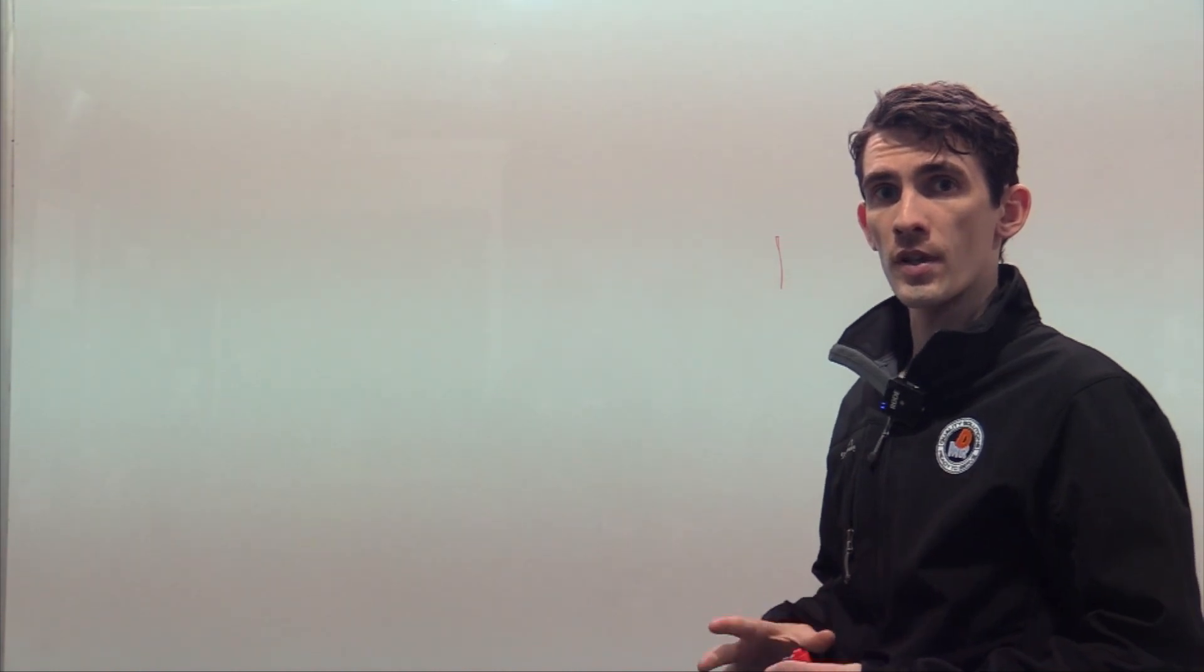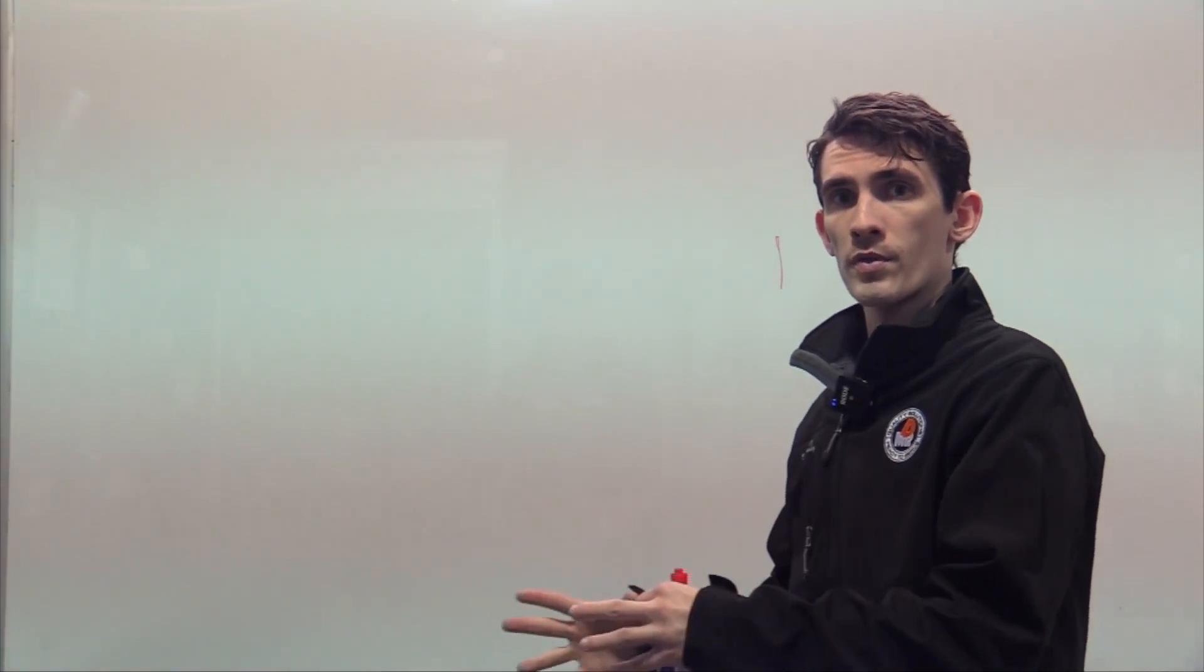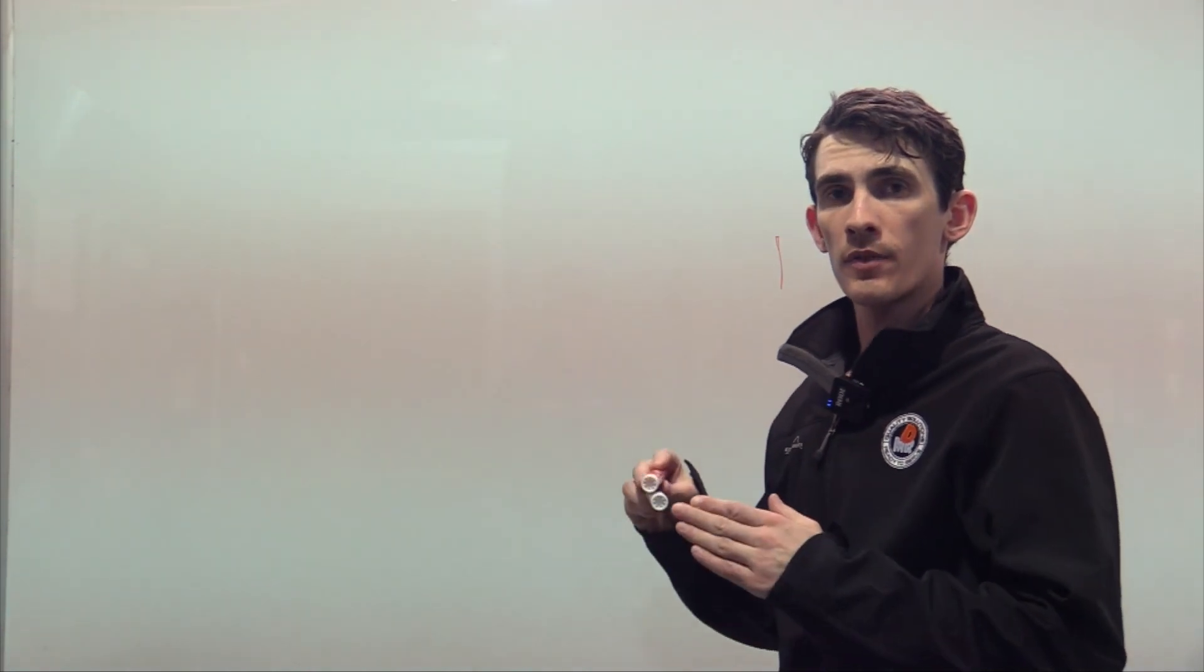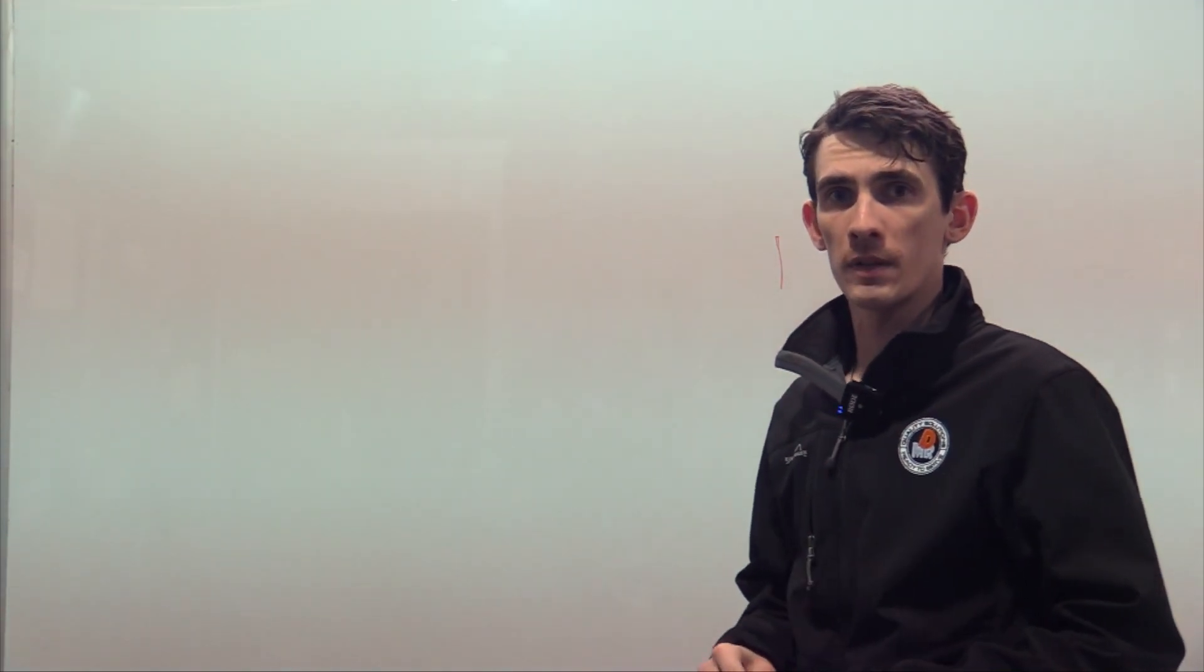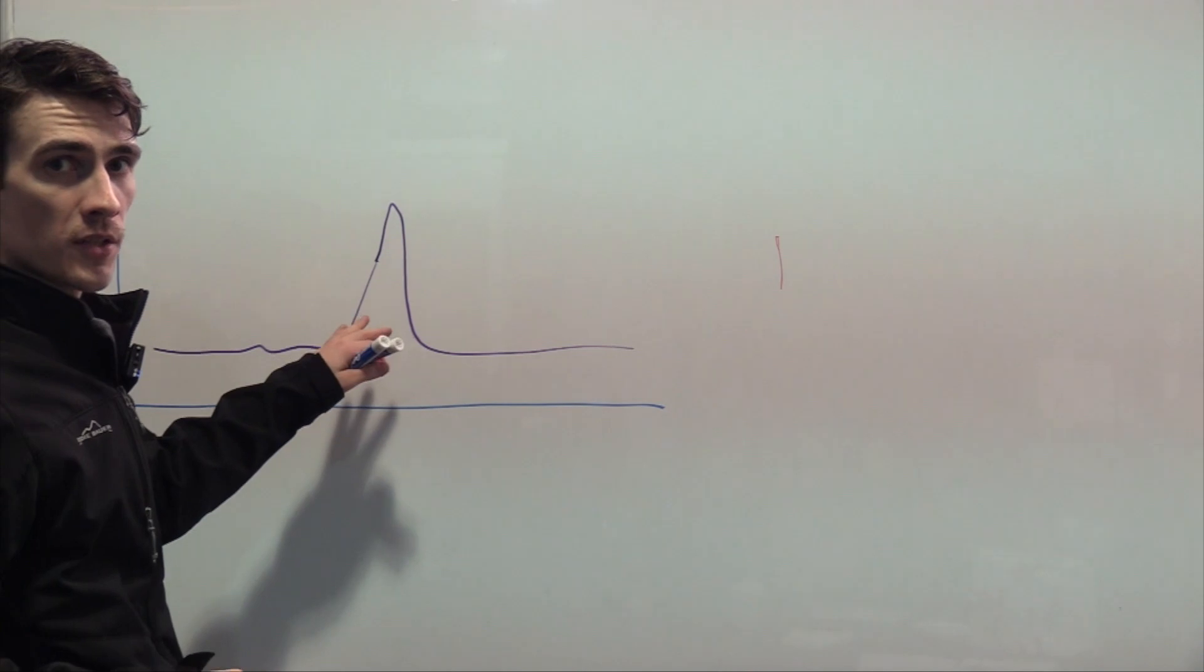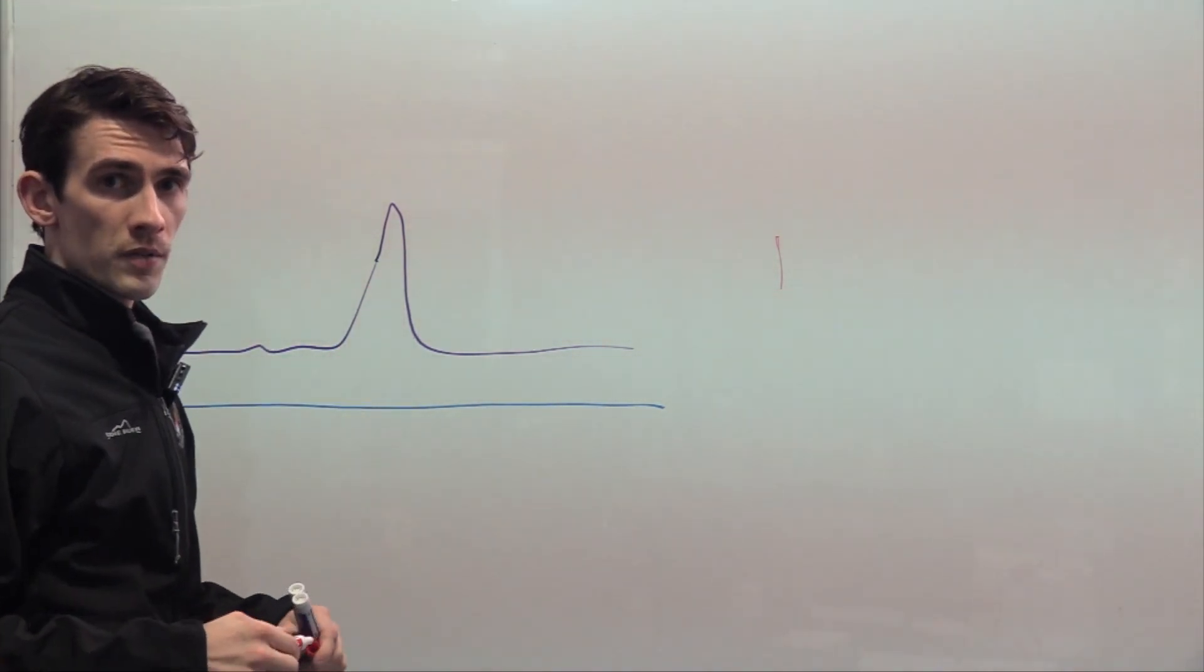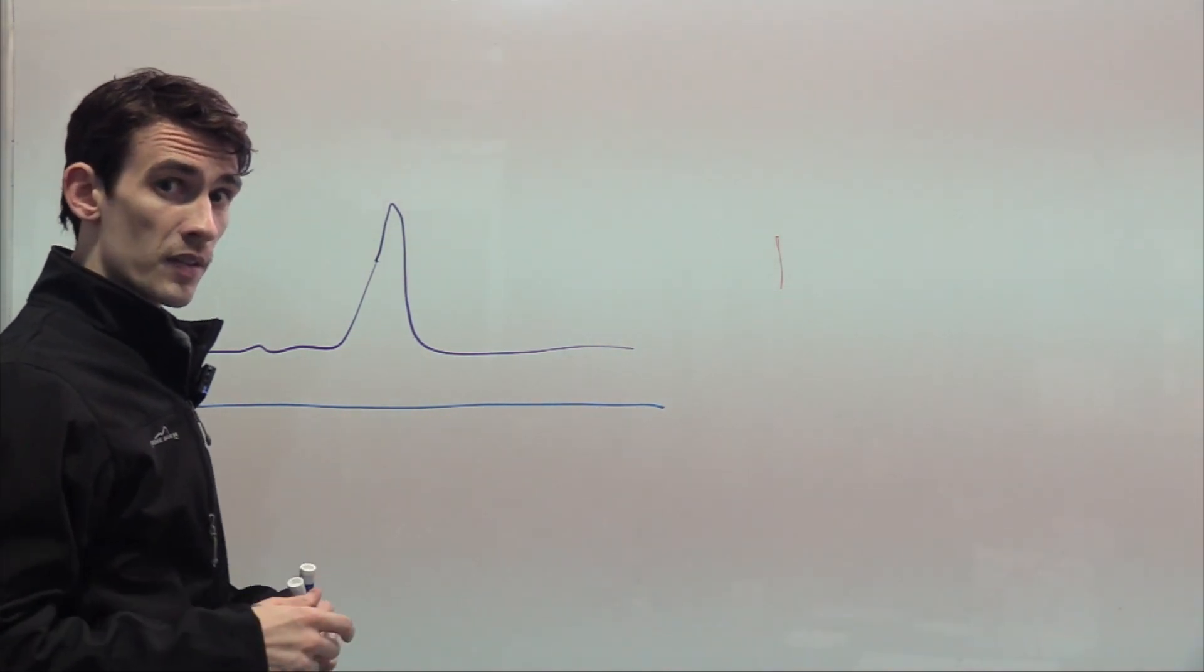First, I'm going to draw the LH surge and how that coincides with the progesterone curve from onset of bleeding all the way through a pregnancy and whelping. So in purple we have the LH surge. This is a very brief hormone that is basically the last precursor to progesterone that's going to kick-start the cycle.